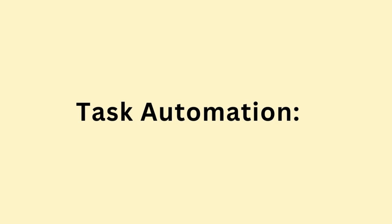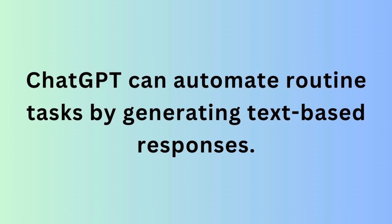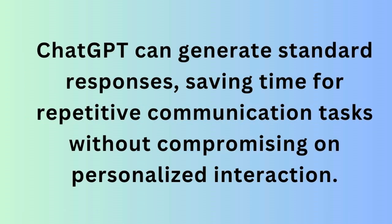Next is Task Automation. ChatGPT can automate routine tasks by generating text-based responses. This can be beneficial for handling repetitive queries, filling out forms, or generating standard replies in communication. For example, for routine emails, ChatGPT can generate standard responses, saving time for repetitive communication tasks without compromising on personalized interaction.